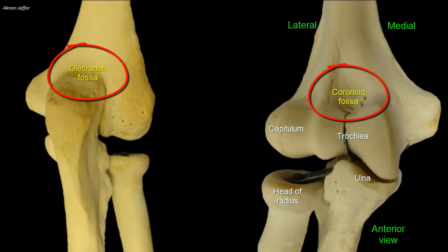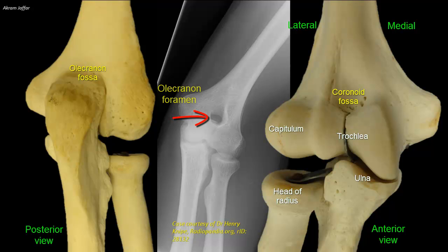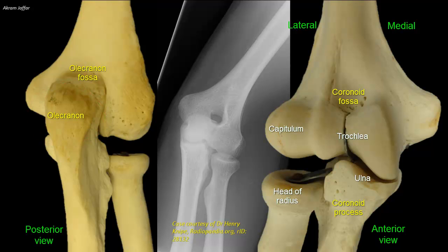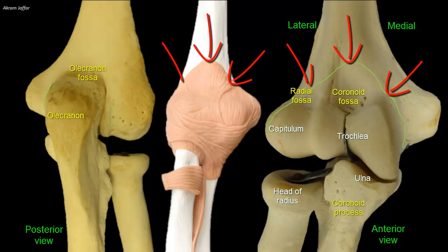Two hollows or fossae occur back-to-back superior to the trochlea, making the condyle quite thin between the epicondyles. Sometimes the bone is absent and an olecranon foramen is present. Anteriorly, the coronoid fossa receives the coronoid process of the ulna during full flexion of the elbow. Posteriorly, the olecranon fossa accommodates the olecranon of the ulna during full extension of the elbow. Superior to the capitulum anteriorly, a shallower radial fossa accommodates the edge of the head of the radius when the forearm is fully flexed. The capsule of the elbow joint is attached to the edge of the trochlea and the capitulum, and also to the humerus above the coronoid and radial fossa. Posteriorly, the capsule includes the olecranon fossa inside it.